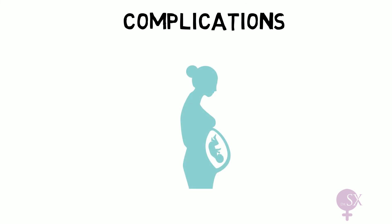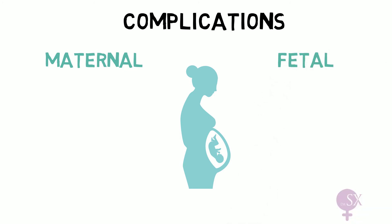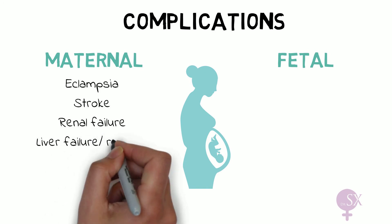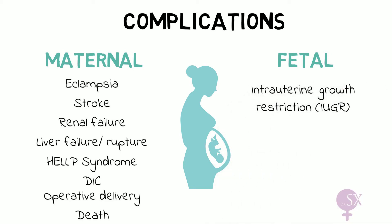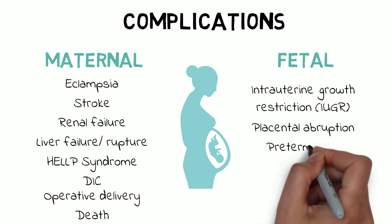Preeclampsia affects both the mother and the fetus. Maternal complications include eclampsia — where the mother develops seizures — stroke, renal failure, liver failure or rupture, HELLP syndrome, disseminated intravascular coagulation (DIC), operative delivery, and death. Fetal complications include intrauterine growth restriction due to reduced blood flow to the placenta, placental abruption, premature birth, and perinatal death.